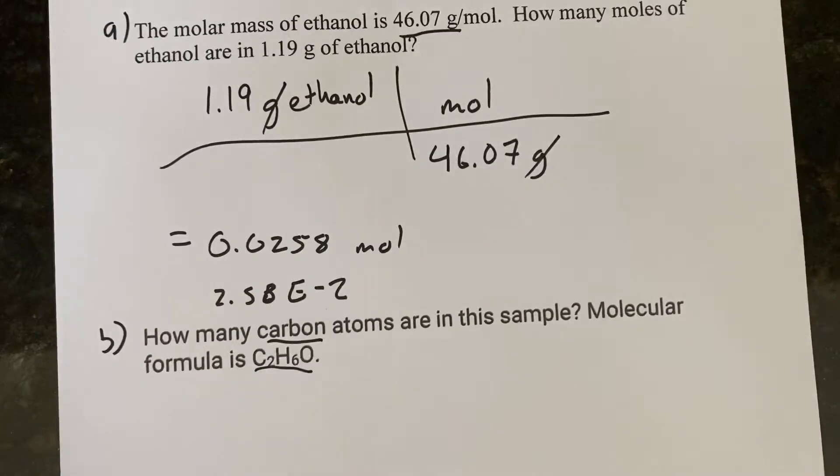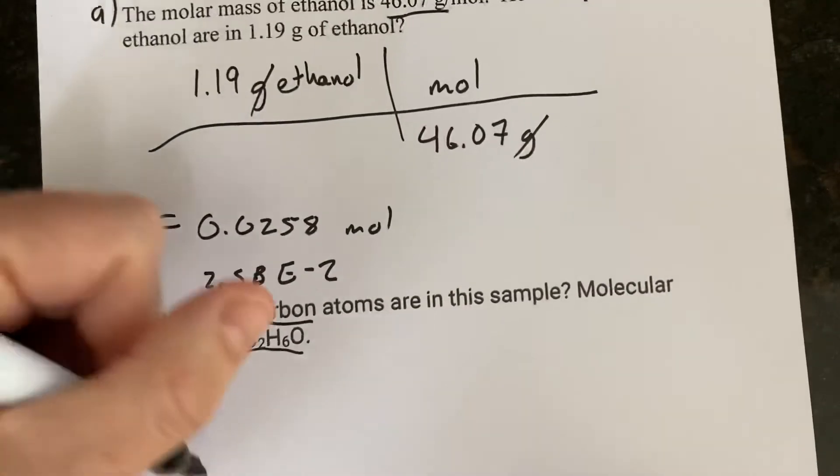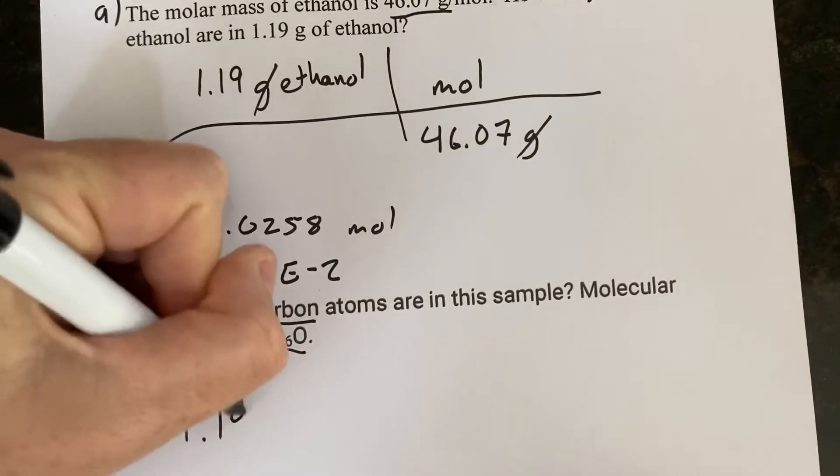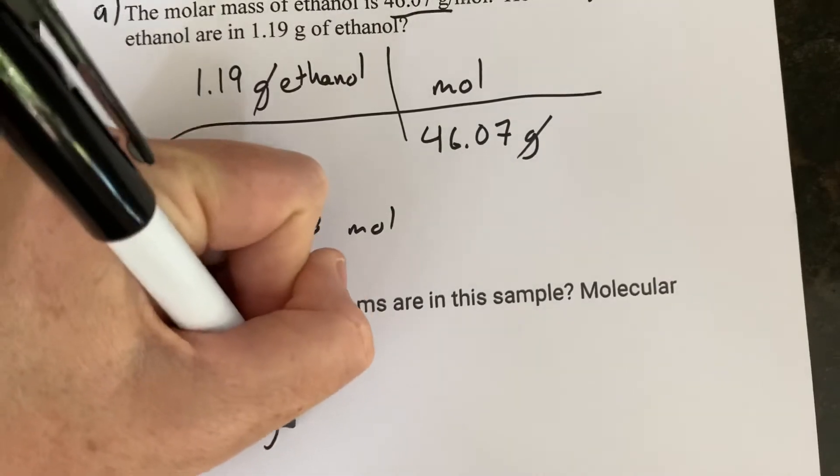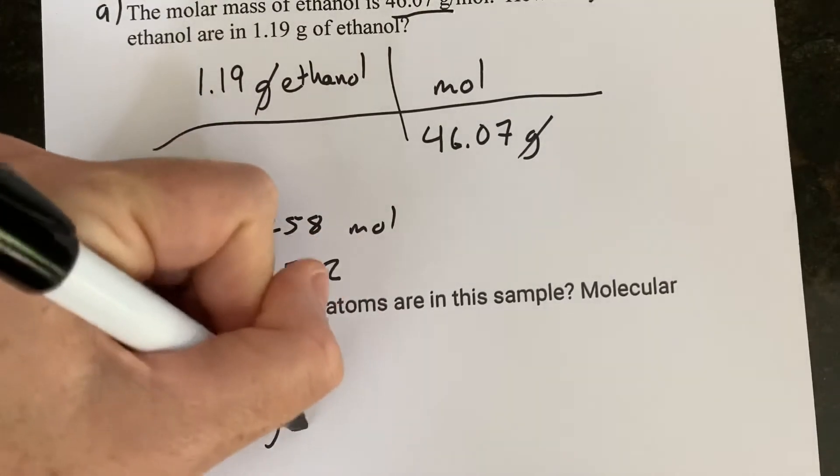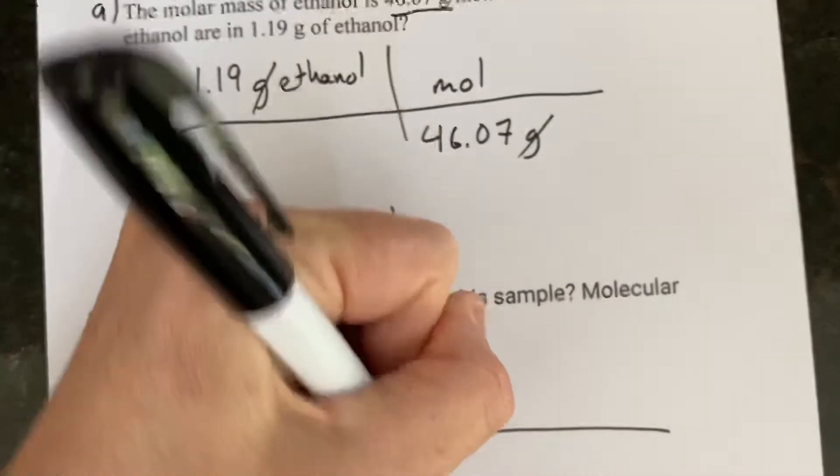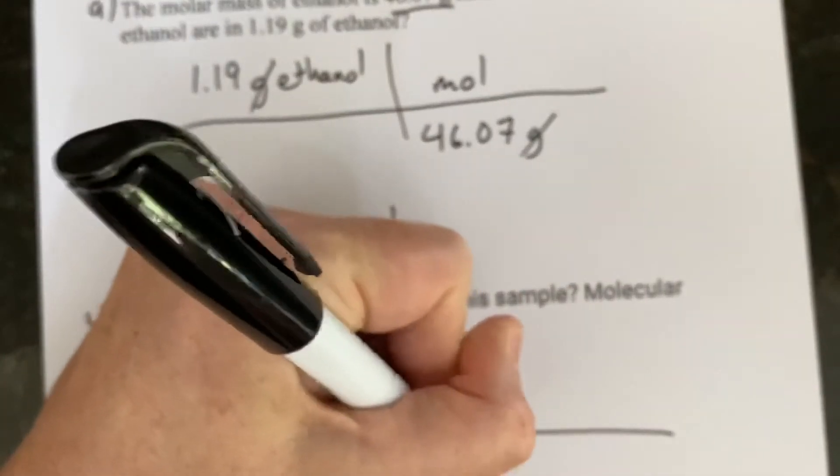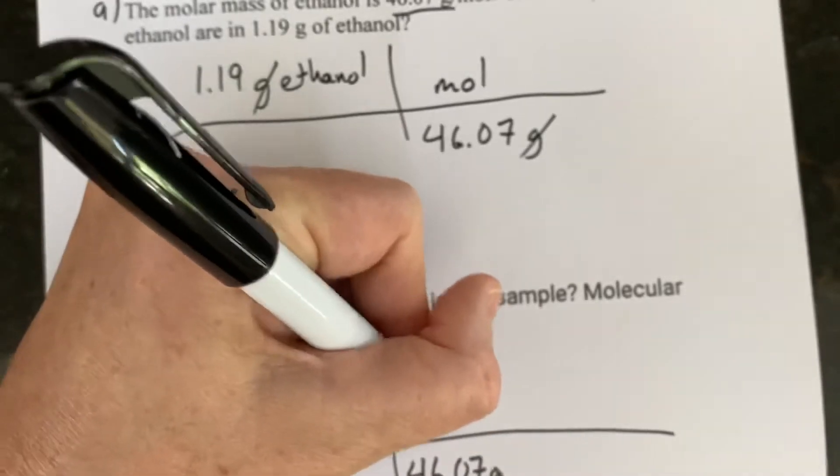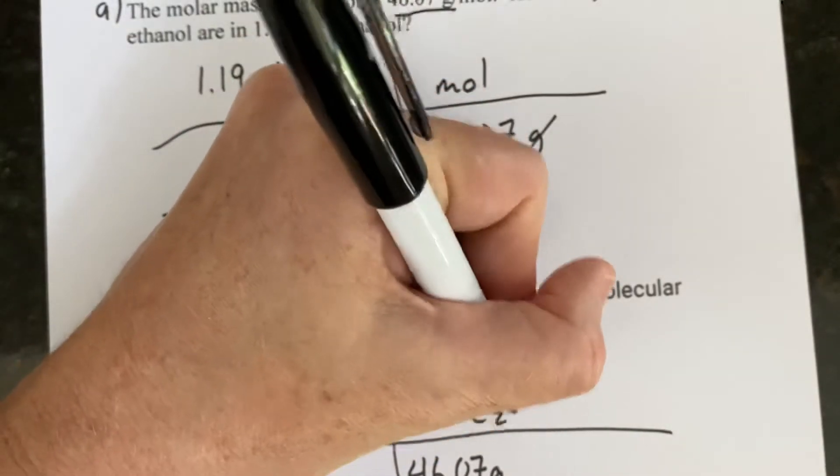So let's go ahead and pretend we don't know anything and start from the beginning. Let's just pretend it said that the sample is 1.19 grams as it does. And now we know ethanol is C2H6O. Turn grams into moles by dividing by the molar mass. Now we're in mole of ethanol.